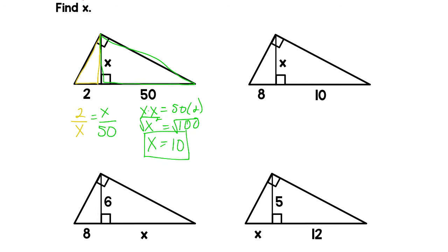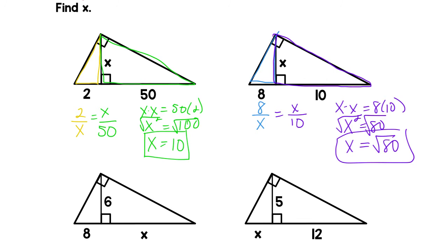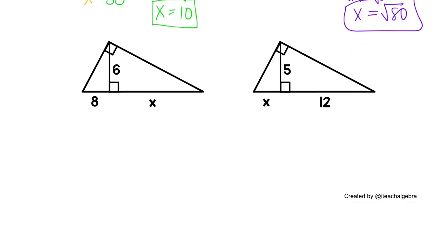Try this next one on your own. I think you can do it. Remember, short leg over long leg. We'll use this first triangle with X and 8. Short over long. And then we'll use X and 10. And that is short over long. So we get X times X equals 8 times 10. That's X squared equals 80. Take the square root of each side. And X is the square root of 80. Hooray! We totally did it!